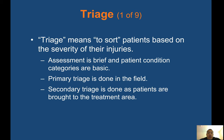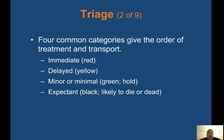Triage means to sort patients based on the severity of their injuries. Assessment is brief and patient condition categories are basic. Primary triage is done in the field; secondary triage is done as patients arrive at the treatment area. Four common categories give the order of treatment and transport: Immediate (Red), Delayed (Yellow), Minor/Minimal (Green), and Expectant (Black) — likely to die or dead.